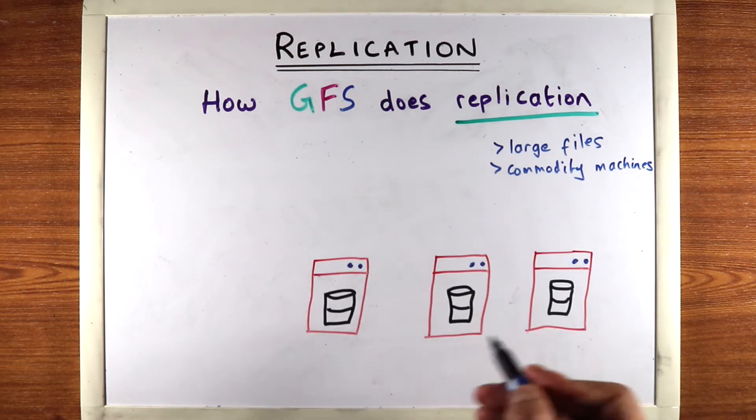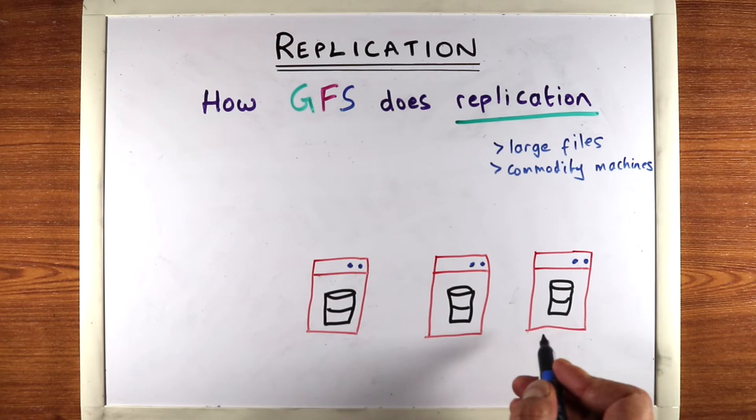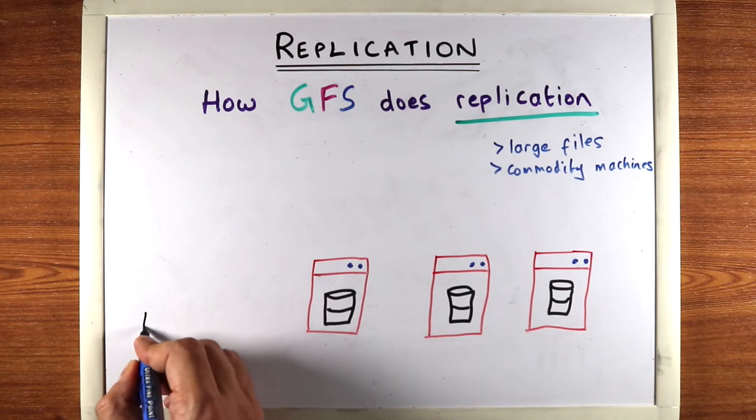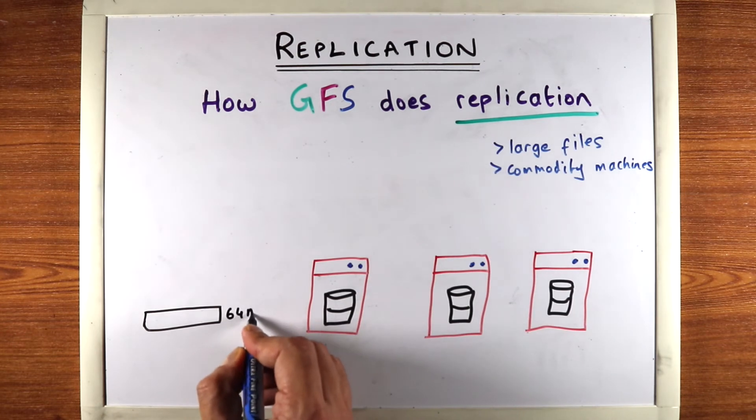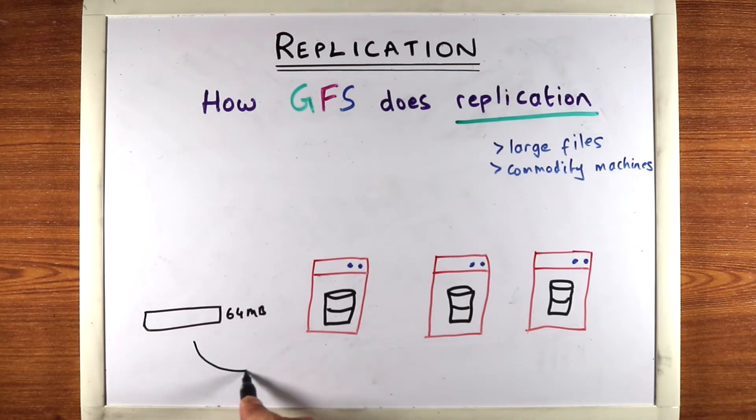So let's say we have these three machines. Each of these machines has a hard drive. And let's say we want to write a piece of data. So there's this block of data that's like 64 megabytes and we want to write it to three machines.